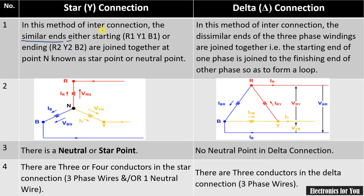In case of delta connection, two dissimilar ends are joined together — meaning R1 is connected with B2 and R2 is connected with Y1 — in such a way that they form a closed loop. This is called a delta connection.